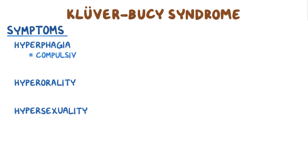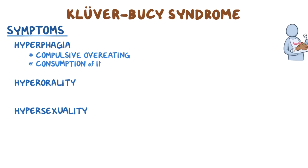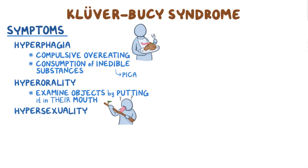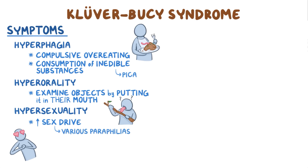Hyperphagia means compulsive overeating. Sometimes this also presents as the consumption of inedible substances like soil and chalk, a condition known as pica. Hyperorality is a type of compulsion where one needs to examine objects by putting them in their mouth. And hypersexuality refers to an elevated sex drive, sometimes associated with various paraphilias, or fetishes.